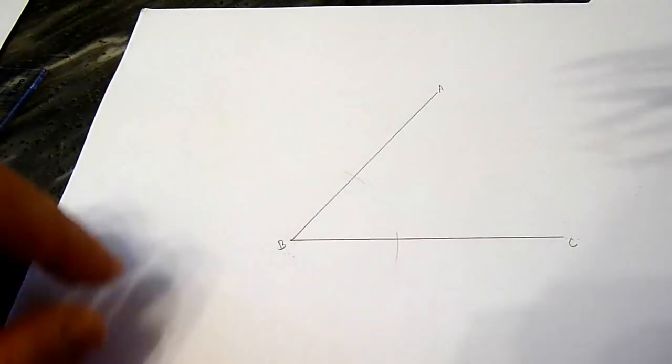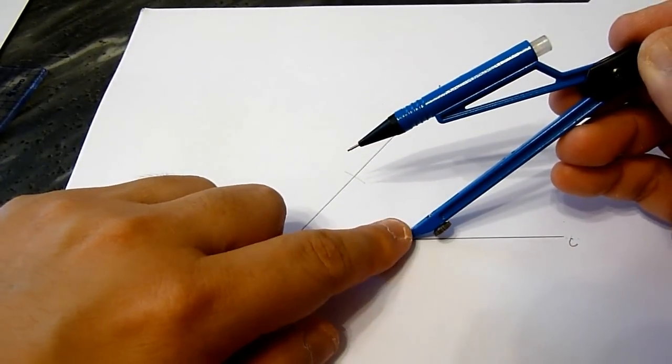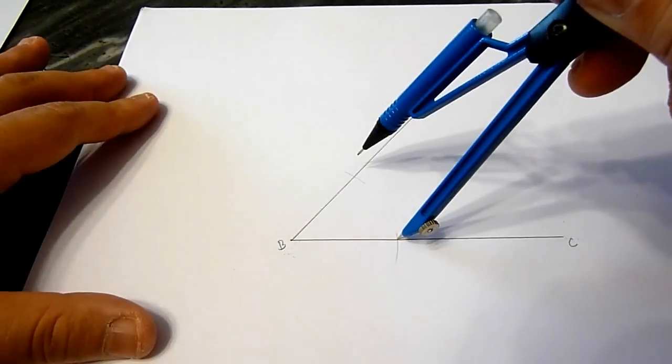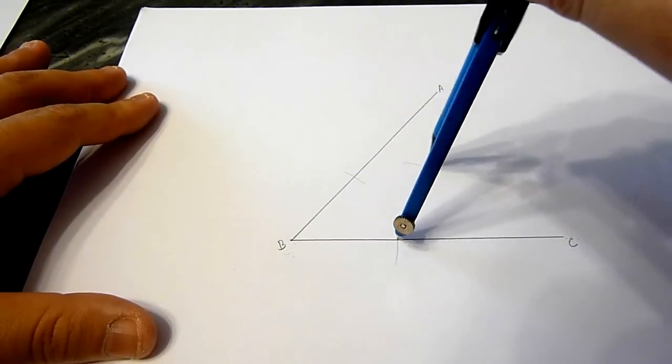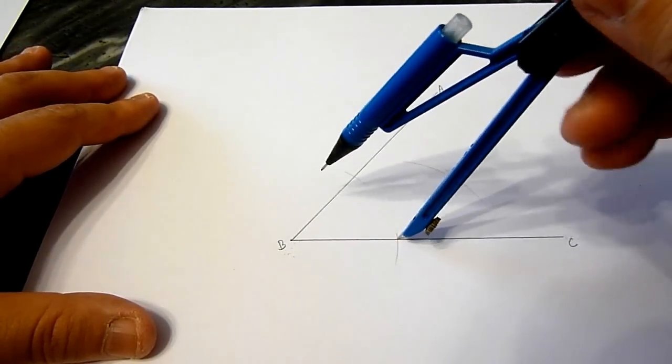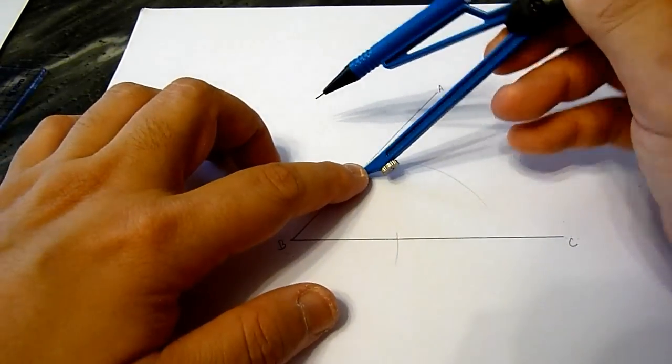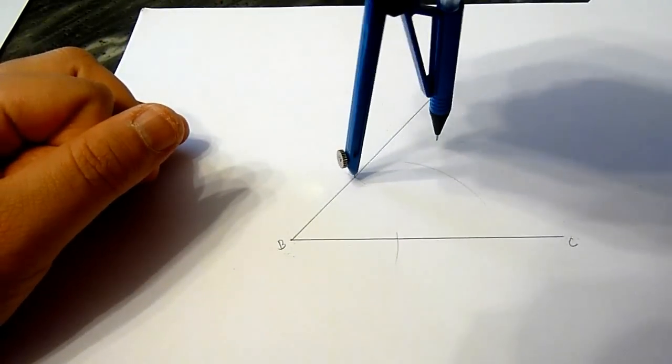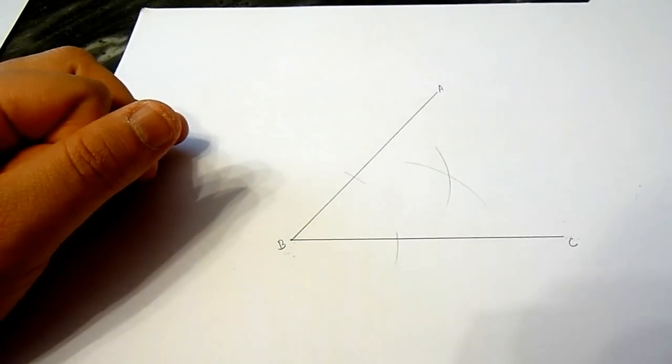Now we place the compass sharp end at one of the arcs here and mark an arc up here, and place it at the other arc and mark another arc.